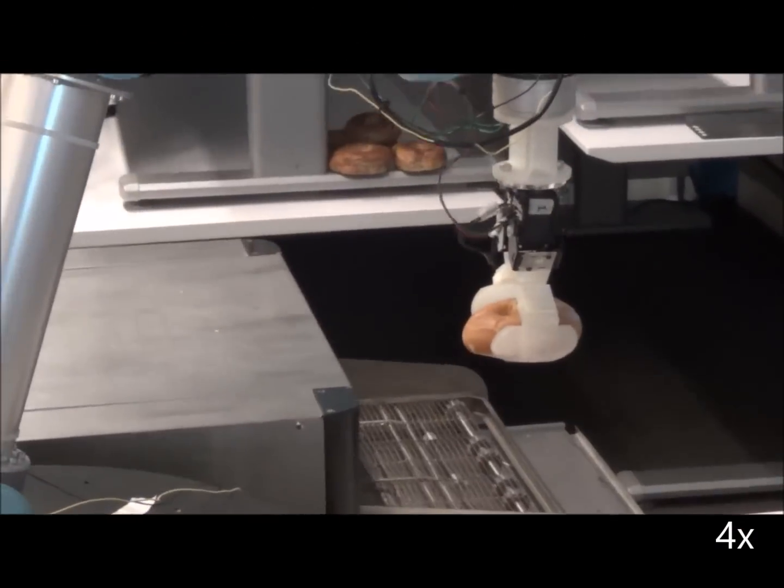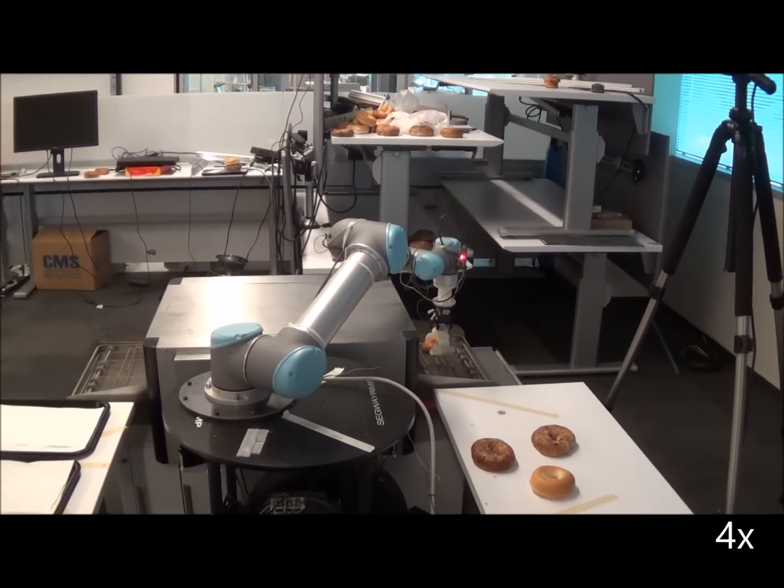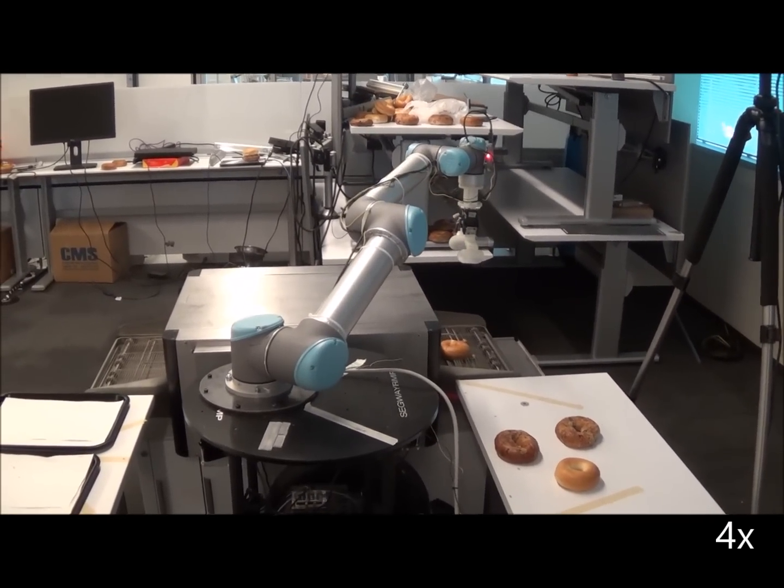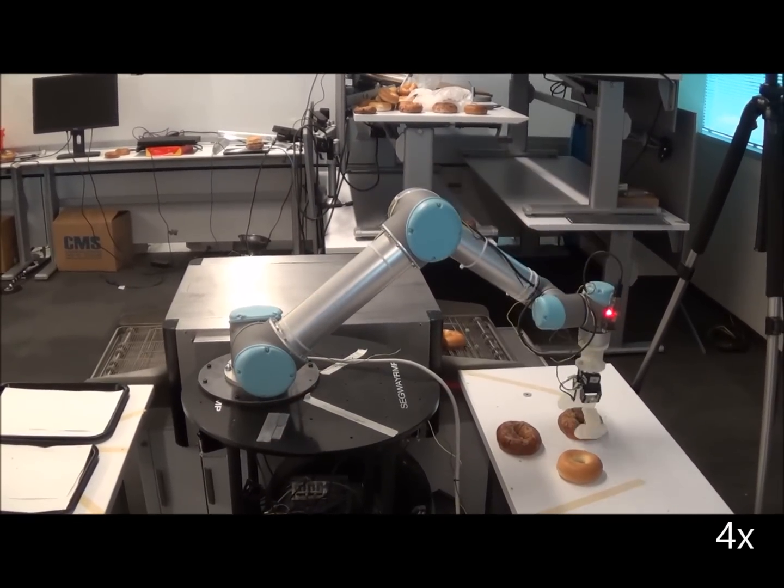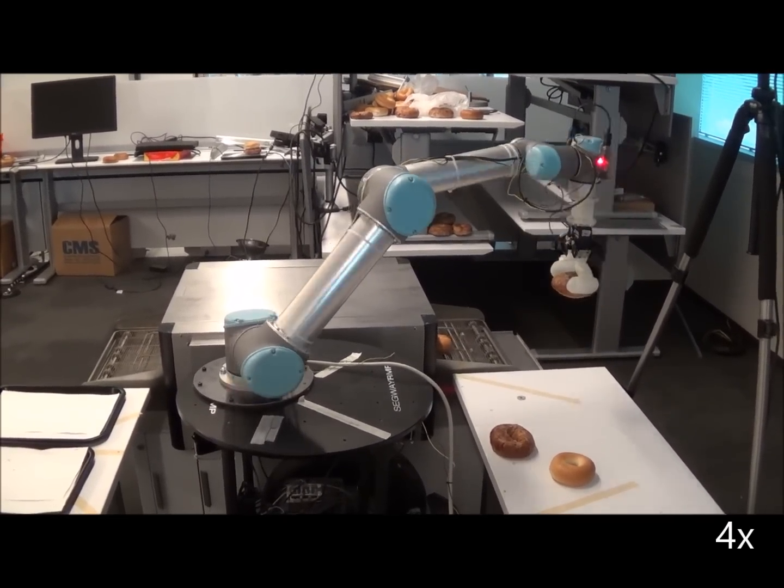All components are now trained and the robot is ready to tend the bagel oven. Initially there are no bagels to unload, so those in the load areas are picked up and placed in the oven entrance.